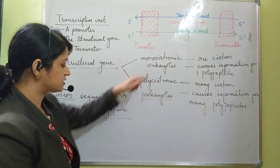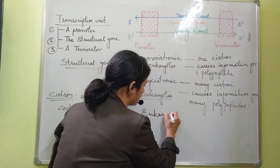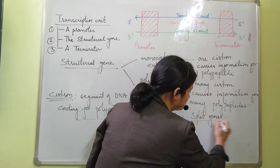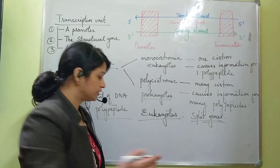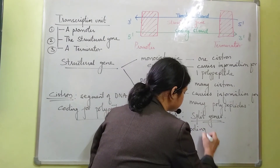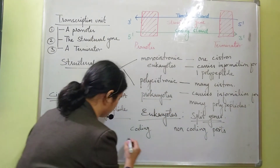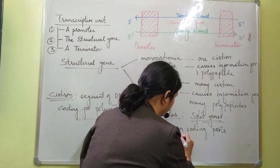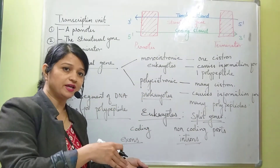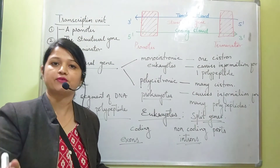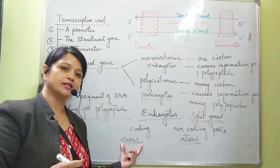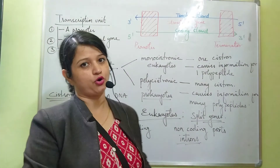One more important thing is that in eukaryotes the genes are split genes. Split genes are those genes which contain both coding as well as non-coding parts. The coding parts are known as exons and the non-coding parts are known as introns. In eukaryotes both coding and non-coding parts are present, which is why that type of gene is known as split genes. When the messenger RNA is synthesized, it contains only the coding parts while the non-coding parts are not present.